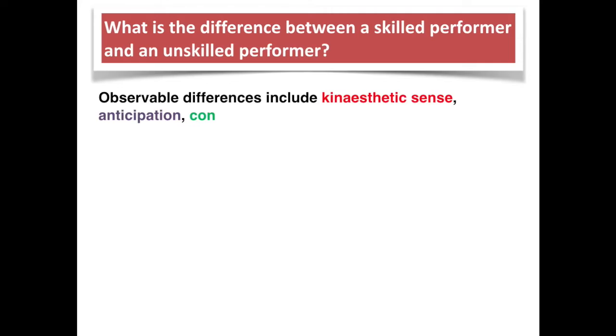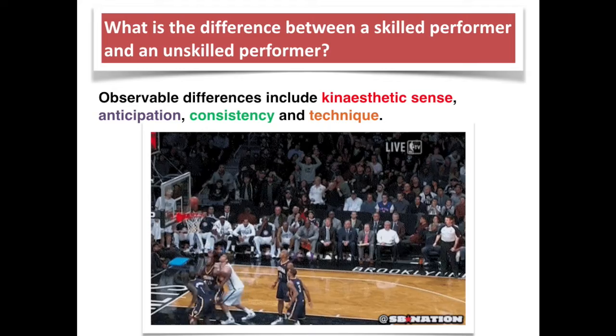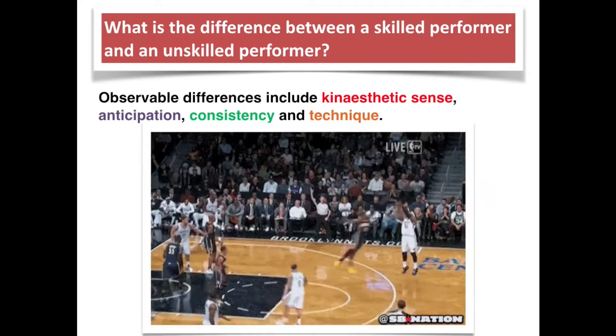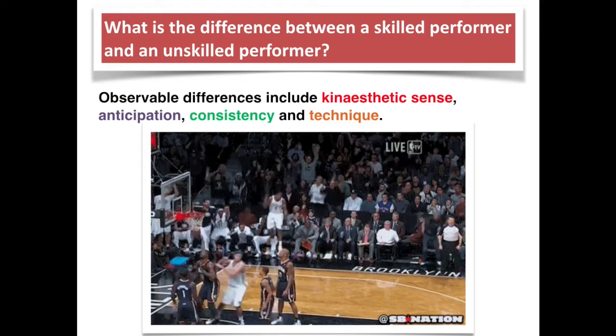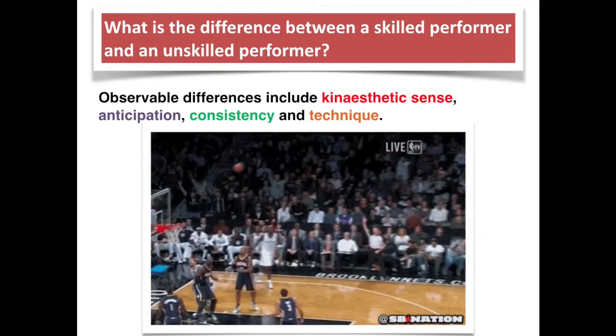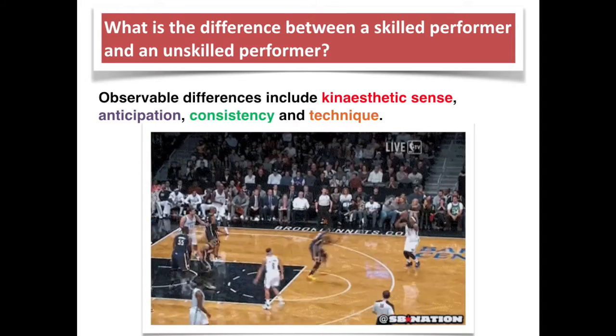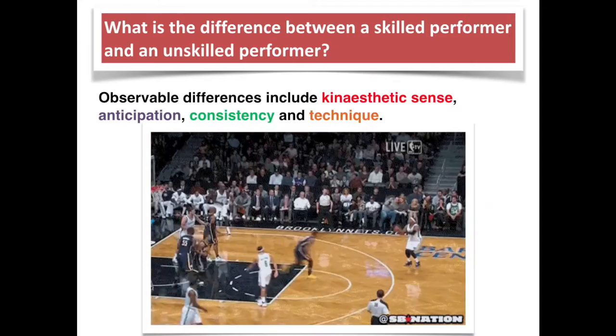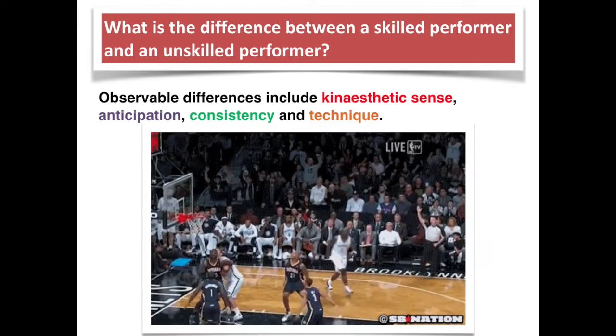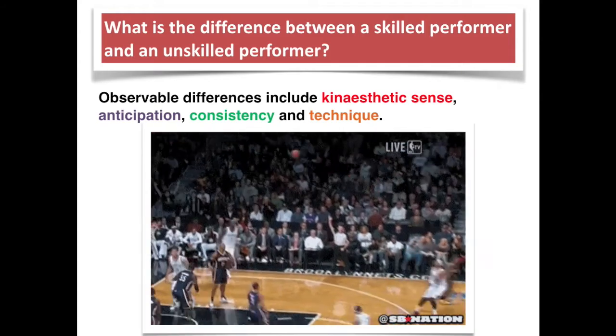There's a huge difference between a skilled and unskilled performer. These characteristics - kinesthetic sense, anticipation, consistency, and technique - are all observable, and they are what makes an athlete skilled and able to perform at very high levels. Those athletes that display these characteristics are considered to be at the autonomous stage of skill acquisition.